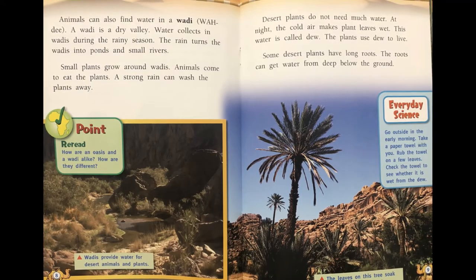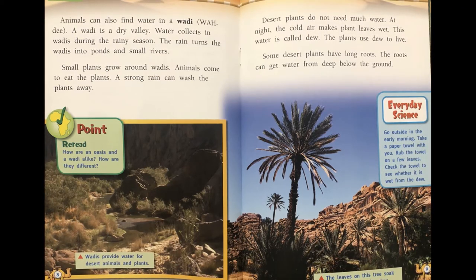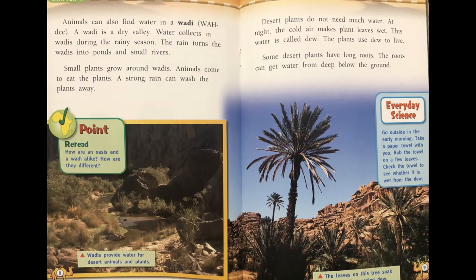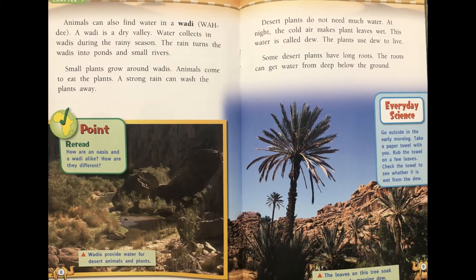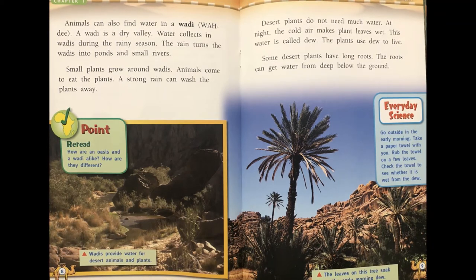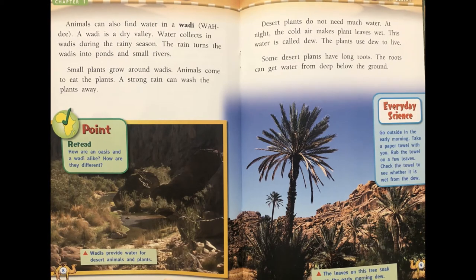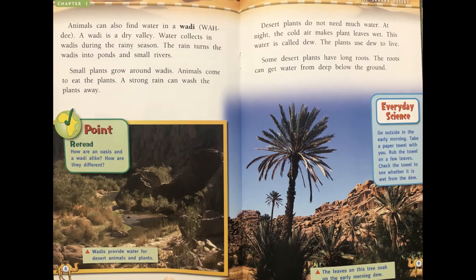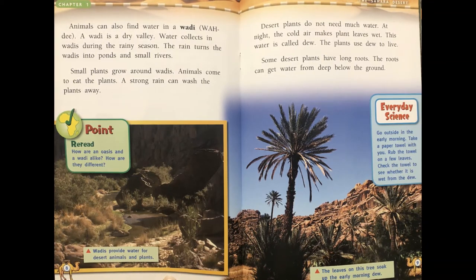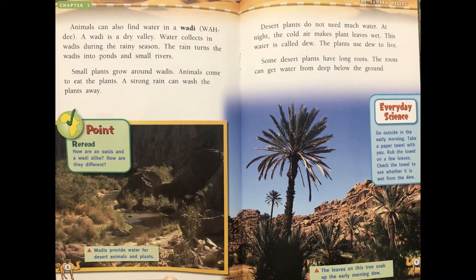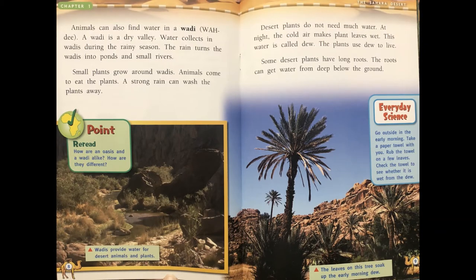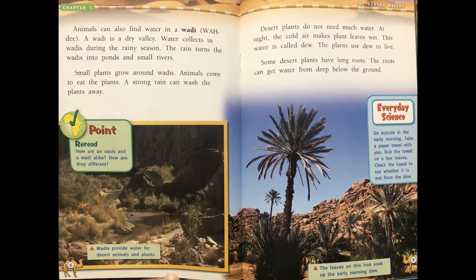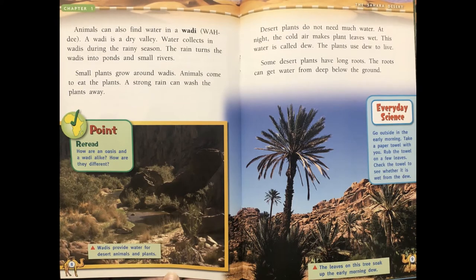Animals can also find water in a wadi — a dry valley where water collects during the rainy season, turning into ponds and small rivers. Small plants grow around wadis, and animals come to eat the plants. A strong rain can wash the plants away. You can reread to find how an oasis and a wadi are alike and how they're different. Desert plants do not need much water. At night, cold air makes plant leaves wet — this water is called dew — and the plants use dew to live. Some desert plants have long roots that can get water from deep below the ground. There's an everyday science activity: go outside in the early morning, take a paper towel, rub it on a few leaves, and check if it's wet from the dew — we're going to do that in a few minutes.